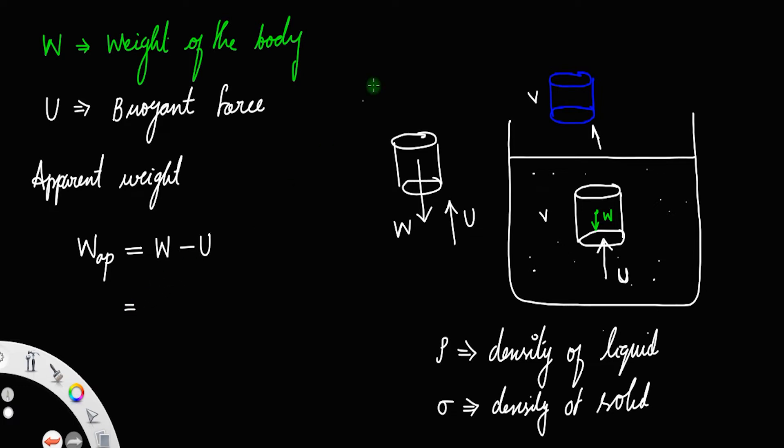But according to Archimedes principle, the upthrust is equal to the weight of the fluid or the weight of the liquid displaced by the body. Since the volume of the body is V, the density of the liquid is rho, and gravity is g, this is the weight of the fluid displaced by the body: V rho g.